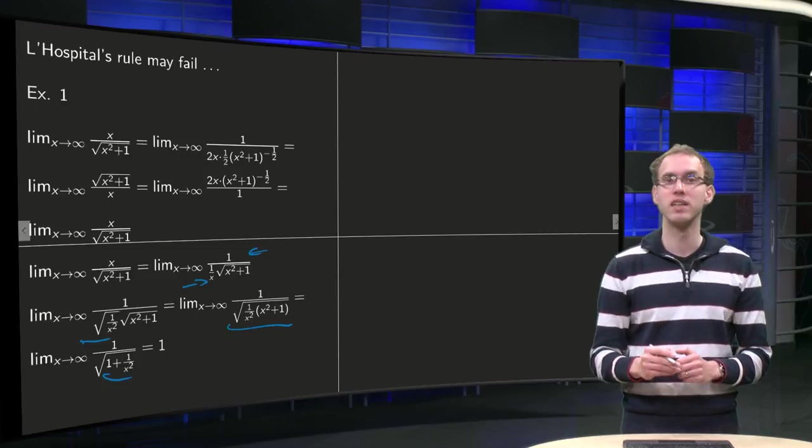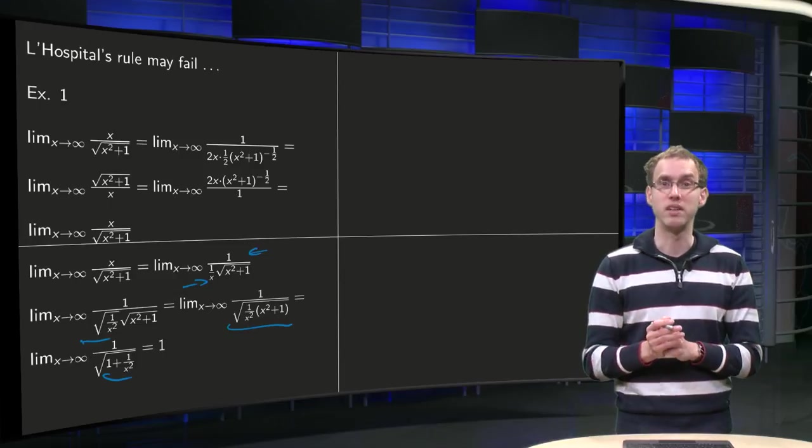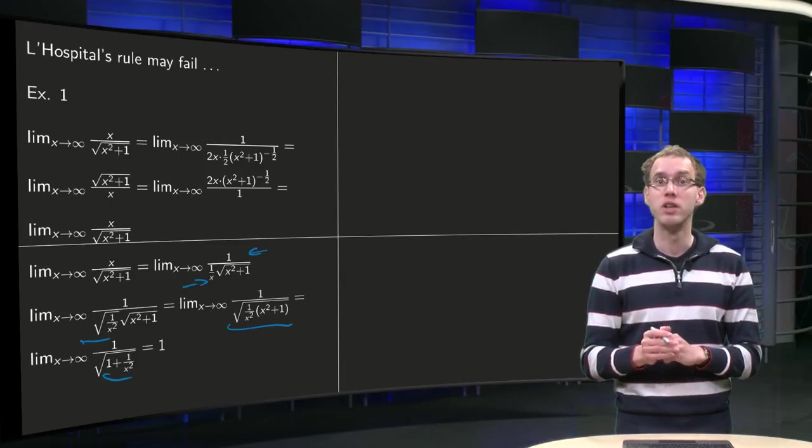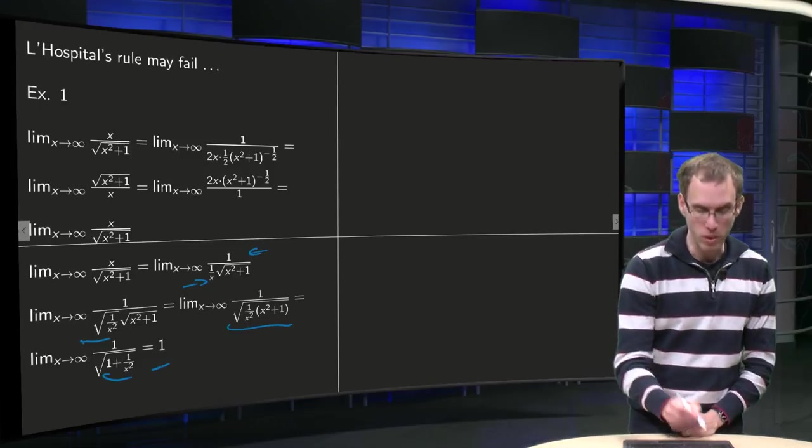We get 1 plus 1 over x squared, and then we have 1 in the numerator and denominator in the limit equals 1 as well, so we can use quotient rule: 1 over 1 equals 1 in our limit.